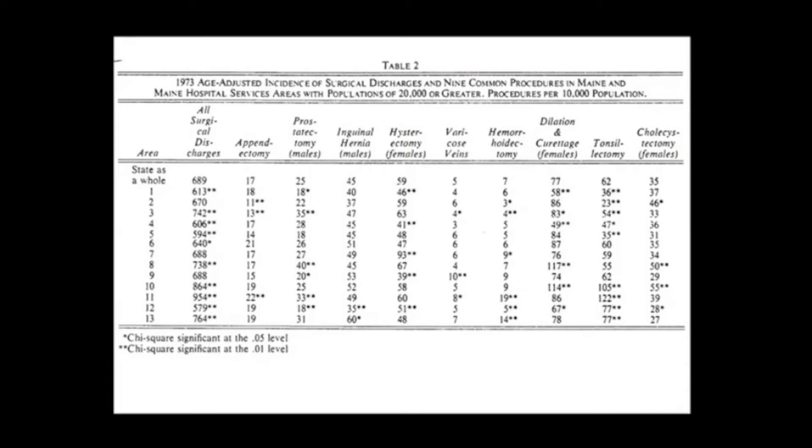So you went to Maine and you looked at hospital service areas. Here you're looking at the 13 hospital service areas in Maine, and you considered a bunch of surgical procedures: appendectomy, prostatectomy, et cetera. But you also looked at tonsillectomy, as you did in Vermont, and you found, again, striking variation in all procedures.